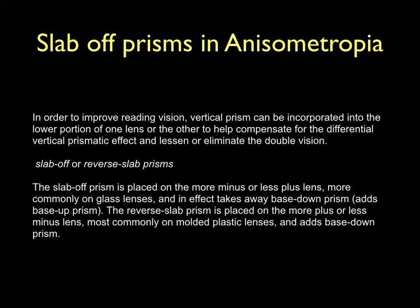Rarely, when children with anisometropia are prescribed new glasses, they may complain of diplopia due to the difference in the prismatic effect of the two lenses. If this situation arises, a vertical prism can be incorporated in the lower portion of one lens to neutralize the differential vertical prismatic effect and eliminate diplopia. These prisms are called slab-off or reverse slab prisms. The slab-off prism is placed on the more-minus or less-plus lens, acting as a base-up prism, while the reverse slab prism is placed on the more-plus or less-minus lens, acting as a base-down prism. Up to 4 to 6 prism diopters of slab-off or rear-slab effect can be obtained when needed.